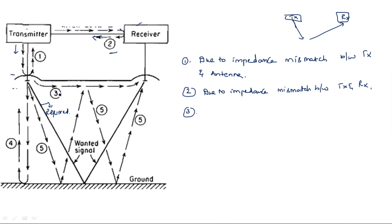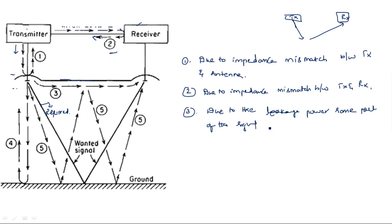Coming to the third case: we generally assume that the transmitter and receiver antennas are separated, but they are not entirely separated. The parabolic antenna may be connected in such a way that some part of the signal may enter through the parabolic plate due to leakage. Due to this leakage power, some part of the signal reaches the receiving antenna, which is also not required.